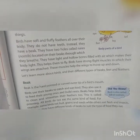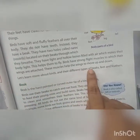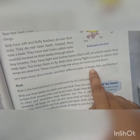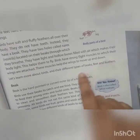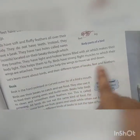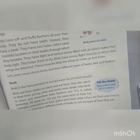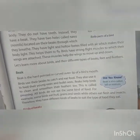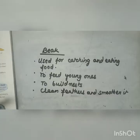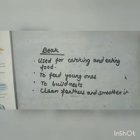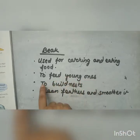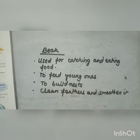Now we will go into the different parts of the body — that is beaks, feet and feathers. We will first have some information about the beak of a bird. The beak is used for catching and eating food. It is also used to feed the young ones. Then it is used to build the nest and also used to clean and smoothen the feathers.